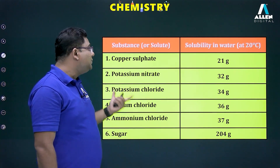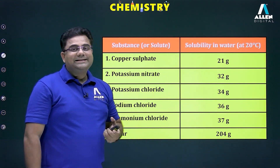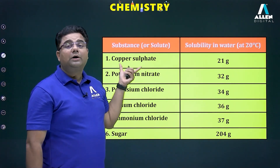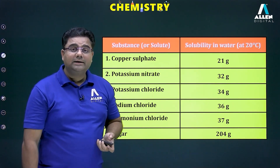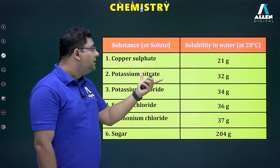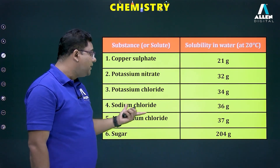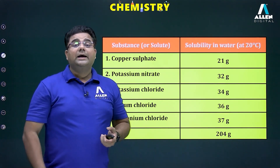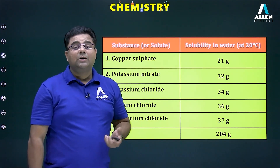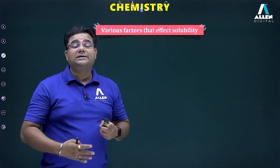We have a table listing different solutes with their solubility in 100 grams of water at 20 degrees Celsius: copper sulfate — 21 grams, potassium nitrate — 32 grams, potassium chloride — 34 grams, sodium chloride — 36 grams, ammonium chloride — 37 grams, and sugar — 204 grams. These are the solubility values of different solutes in water.